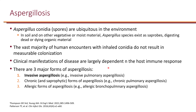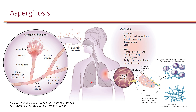Clinical manifestations of disease are largely dependent on host immune response. In general, aspergillosis is broken into three types: invasive aspergillosis — for example, pulmonary aspergillosis — chronic forms of aspergillosis, and the allergic form of aspergillosis. We are going to focus on invasive pulmonary aspergillosis in this course.